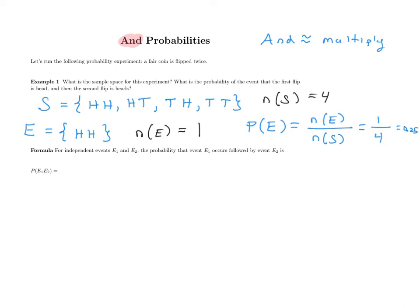There is a formula that can speed up this process. For independent events E1 and E2 — independent meaning they have no effect on each other — the probability that E1 occurs followed by E2 is: P(E1 and E2) = P(E1) × P(E2). This is what is meant by an AND probability: if E1 happens and then E2 happens, we multiply those two probabilities together to get our final answer.